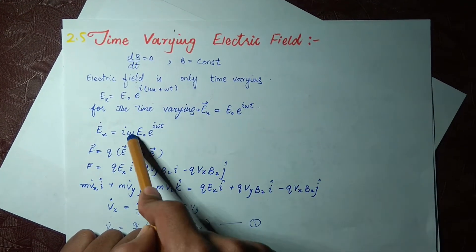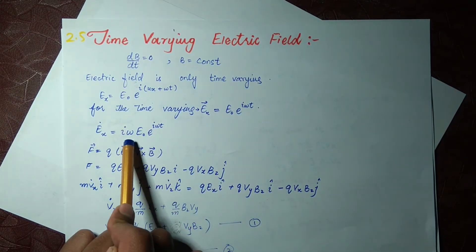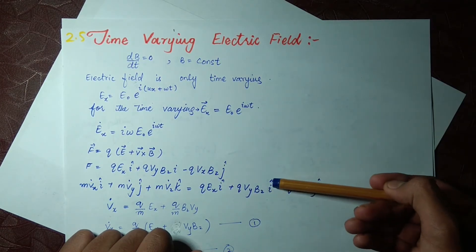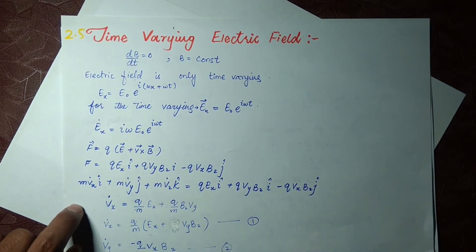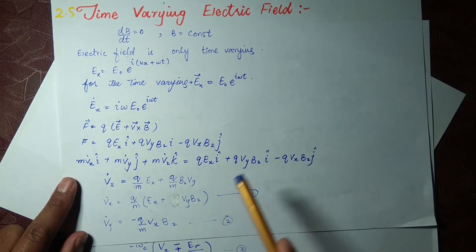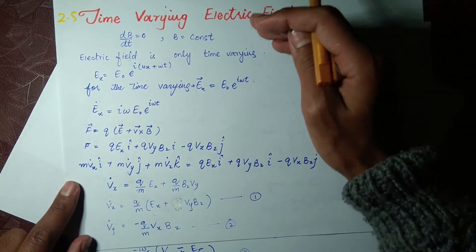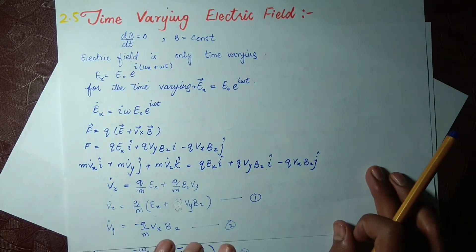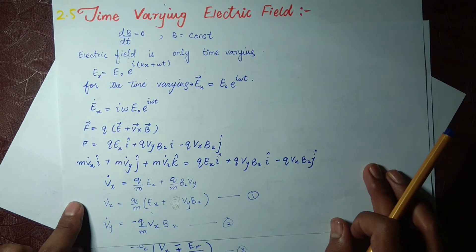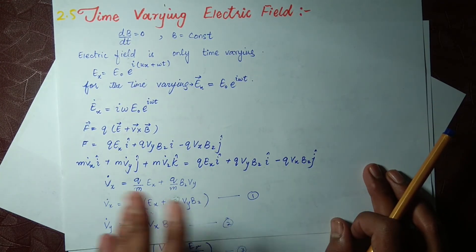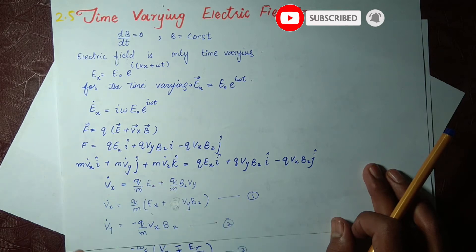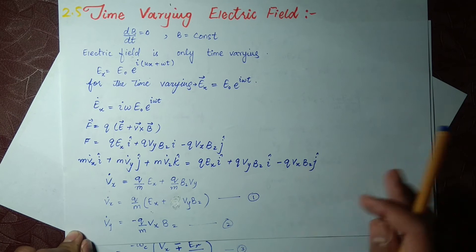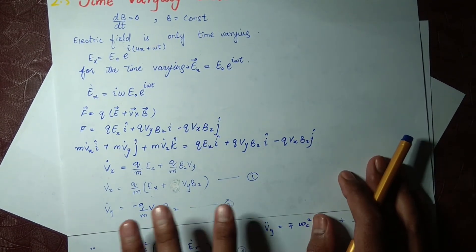We take the time derivative of this equation — the iωt in the exponent comes down as a factor. We apply the Lorentz force and separate it into components: x, y, and z respectively. If I am moving too fast, please pause the video, write these steps, understand what I have said, and then move on. Try to write all these equations step by step.